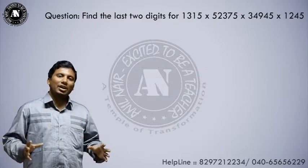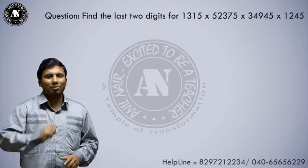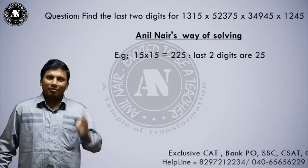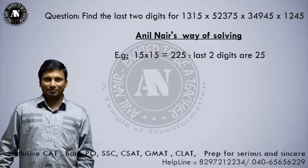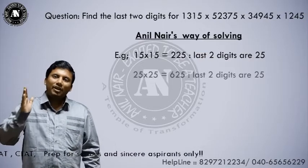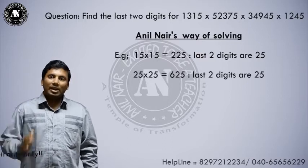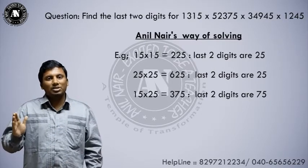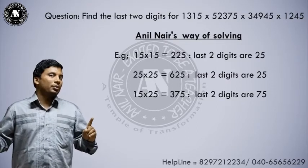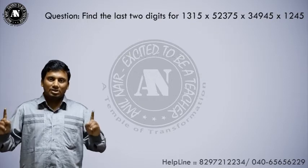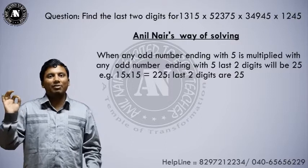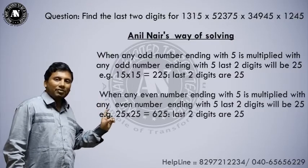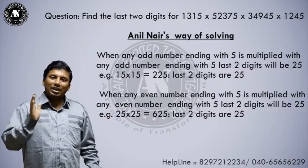Let me show you another way to solve this problem. Before solving, let me explain a few concepts with examples. Example 1: 15 into 15 equals 225 — the last two digits are 25. 25 into 25 equals 625 — last two digits are 25. 15 into 25 equals 375 — last two digits are 75. From these examples, when you multiply any odd number ending with 5 into any odd number ending with 5, or any even number ending with 5 into any even number ending with 5, the last two digits will be 25.